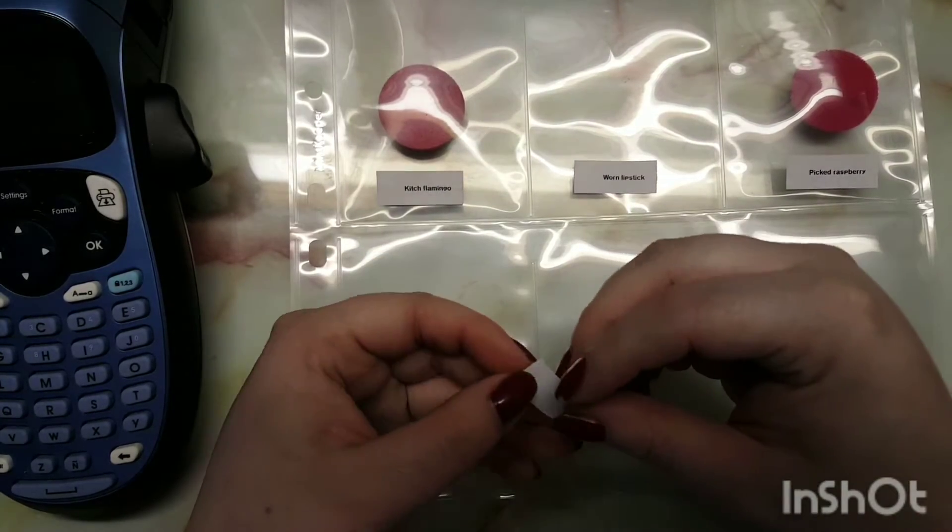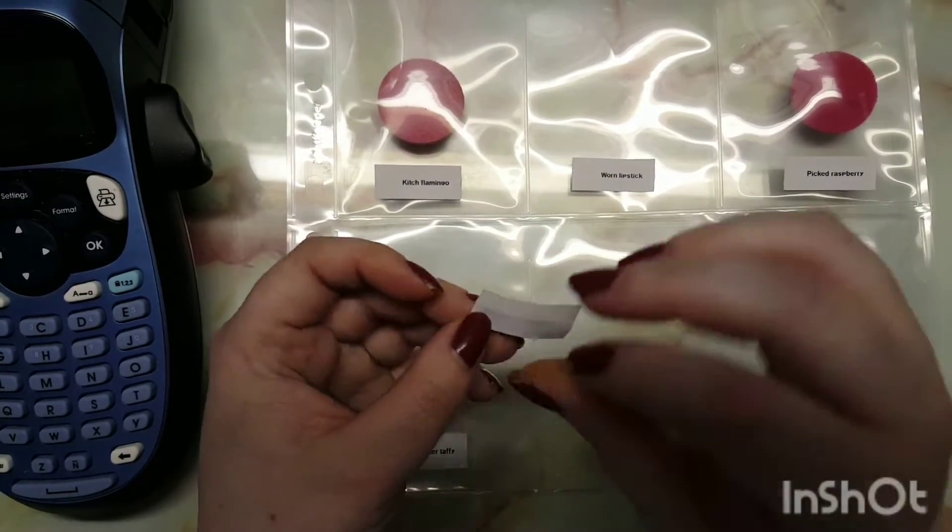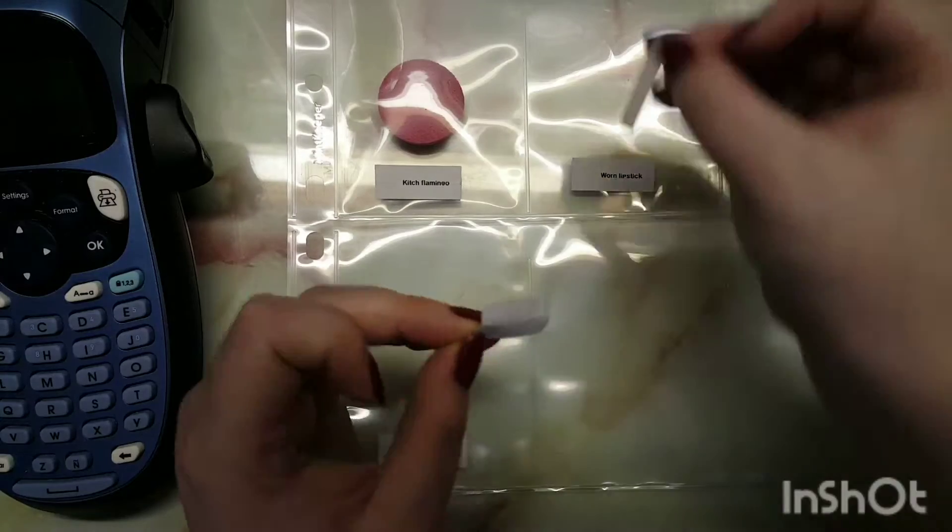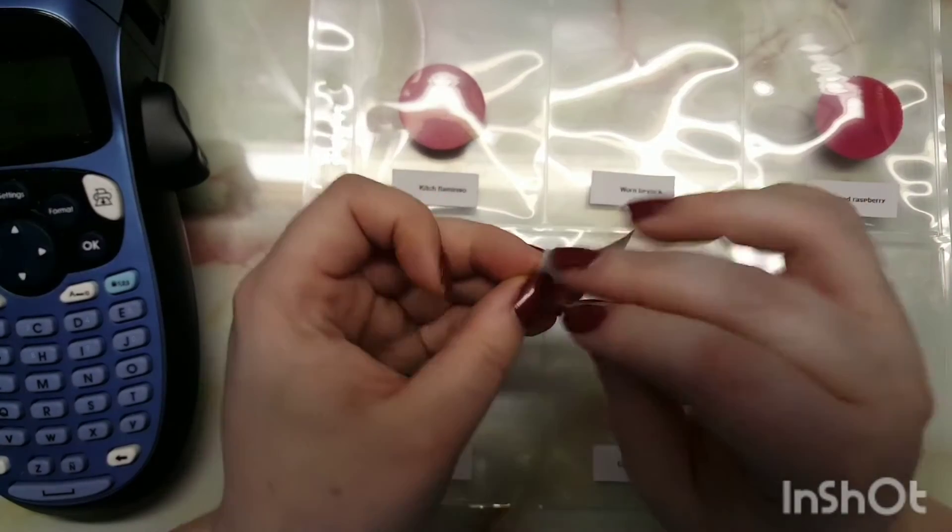As you can see, once I've printed the label off, I'm just sticking them onto the pockets and then putting in the sponges. Most of the sponges that I had I managed to remember which ones were which.